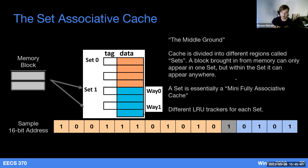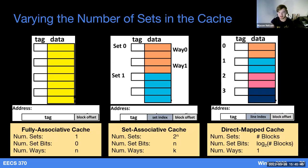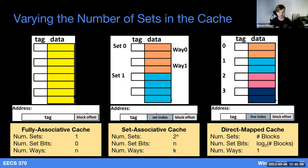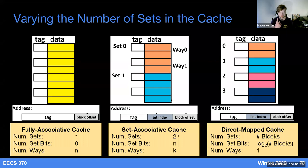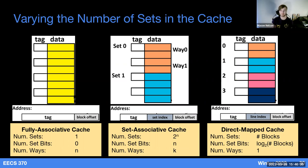We can find a middle ground with a set-associative cache. The number of set bits is the log base two of the number of sets. With one set bit, we have set zero and set one. The fully-associative cache is a special case with one set and no set bits; the direct-map cache has as many sets as blocks — one block per set. The number of blocks per set is also called the number of ways, because there are that many possible destinations for a new block being brought in.